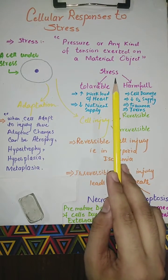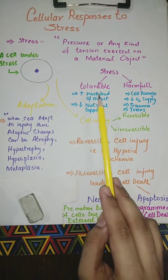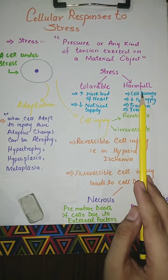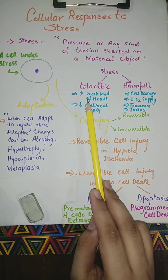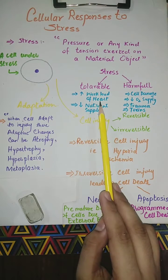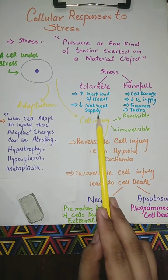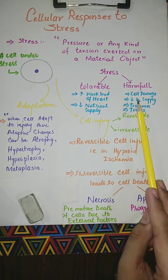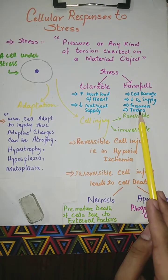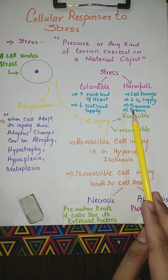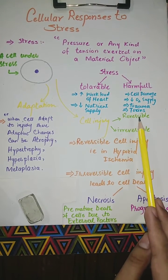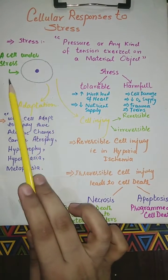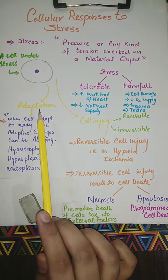Stress can be of two types: tolerable or harmful. Tolerable stress is stress that can be tolerated by the cells, tissues, and organs — for example, increased heart load or decreased nutrient supply. Harmful stress can be caused by cell damage, decreased oxygen supply such as hypoxia and ischemia, trauma, and toxins.